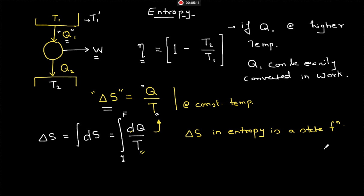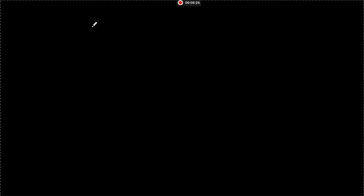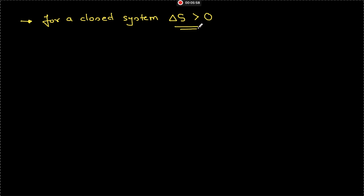Now let us talk about what the implications are and how the second law of thermodynamics puts a restriction on what the change in entropy should be. The second law of thermodynamics can be stated in terms of entropy: for a closed system, change in entropy should be greater than zero. This gives a direction to any process. Basically, if some process happens spontaneously in a closed system, the entropy of that system will always increase.